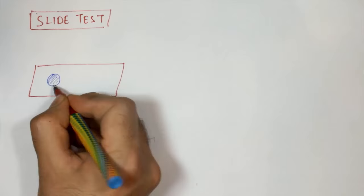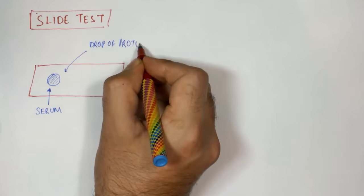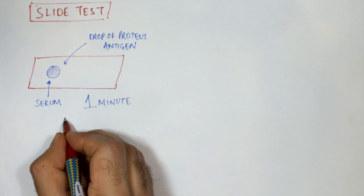Let's first talk about the slide test. We take a slide and put a drop of the serum, and next we put a drop of the Proteus antigen onto the same slide. We wait for one minute and if agglutination occurs, this indicates that the test is positive.